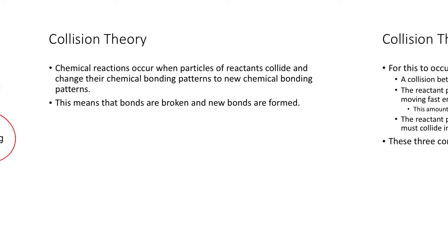What is collision theory? Chemical reactions occur when particles of reactants collide and change their chemical bonding patterns to new chemical bonding patterns. That means that bonds are broken and new bonds are formed.